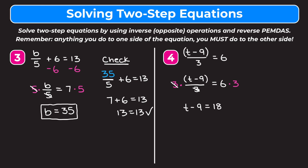Now to get rid of this 9 that's being subtracted, we do the inverse, which is addition. So we add 9 to both sides. On the left, minus 9 and plus 9 go to 0, leaving t. On the right, 18 plus 9 is 27. So t is equal to 27.